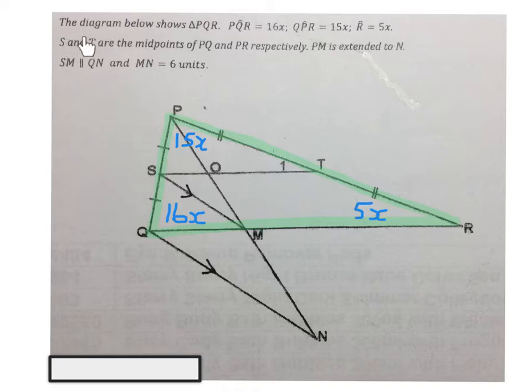S and T are the midpoints of PQ and PR. They indicated here there is S, and that is equal to that, and T is the midpoint, so that is equal to that. Then they said PM is extended to N, and you must learn that implies this is a straight line all the way there. Any place where they say something is extended implies a straight line.